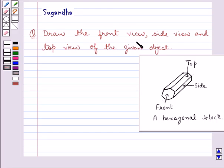draw the front view, side view and top view of the given object. And we are given a hexagonal block for which we have to draw the front view, side view and the top view.